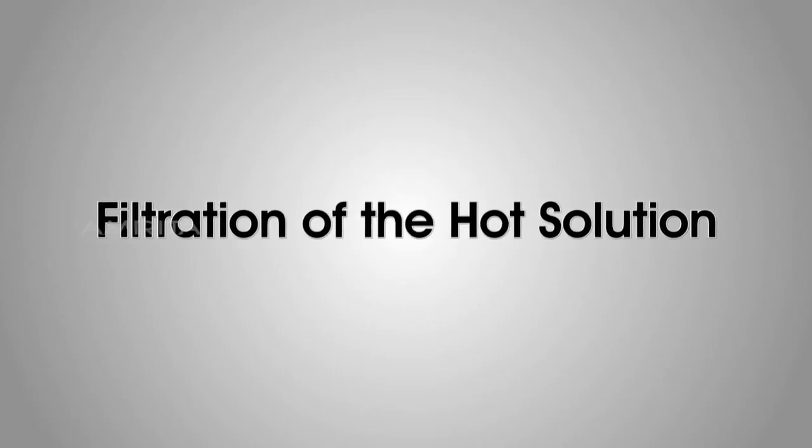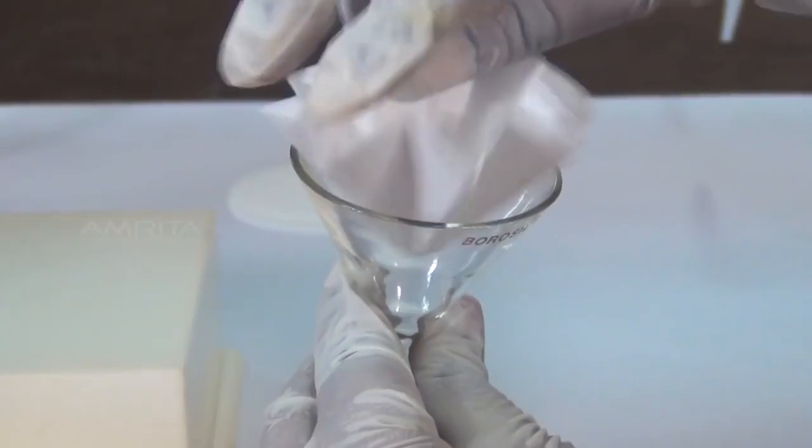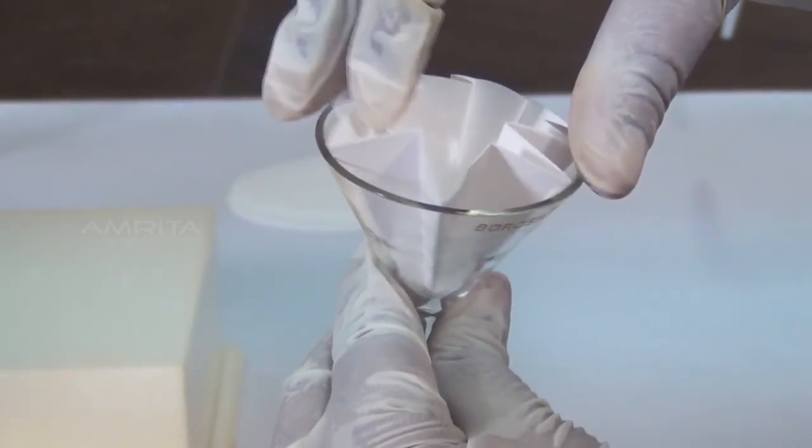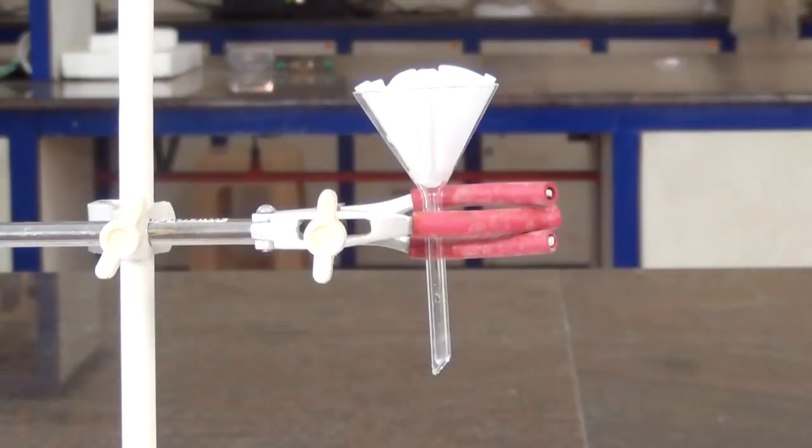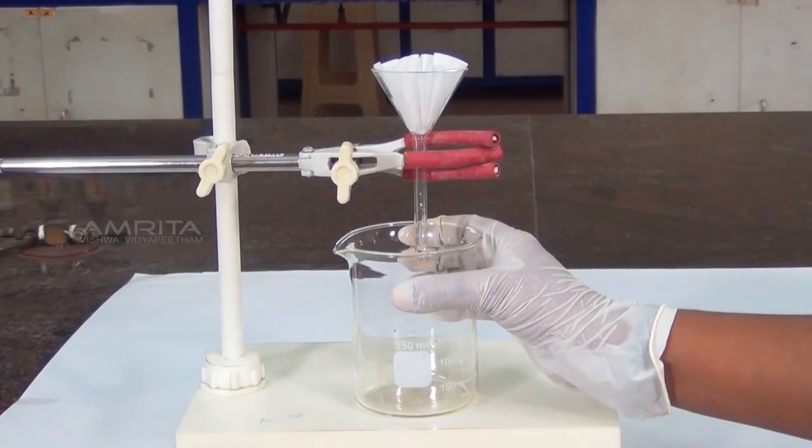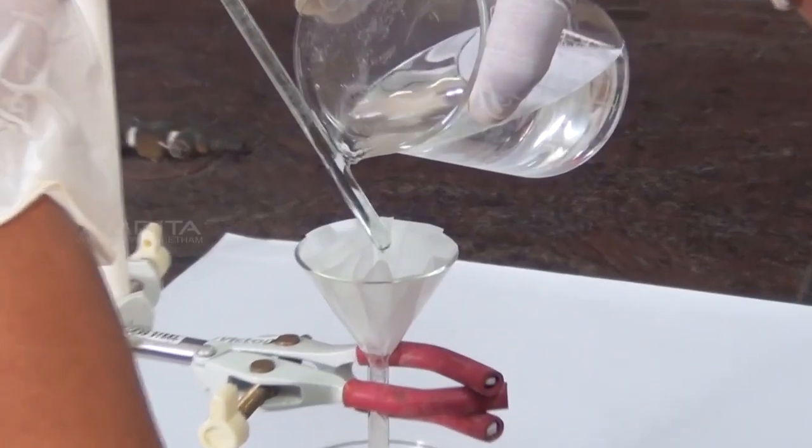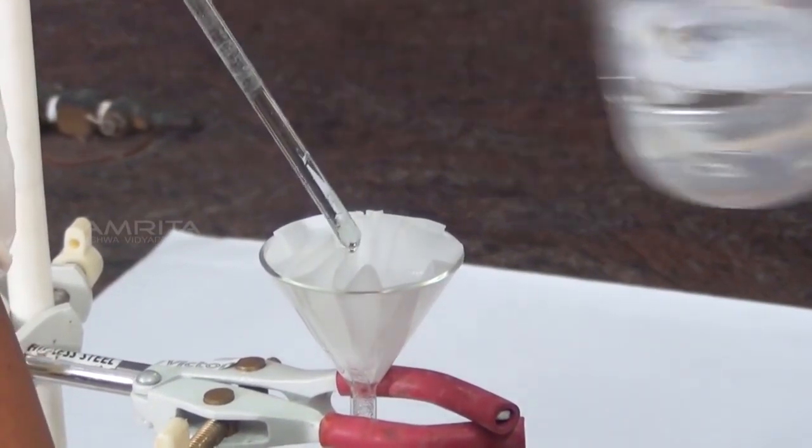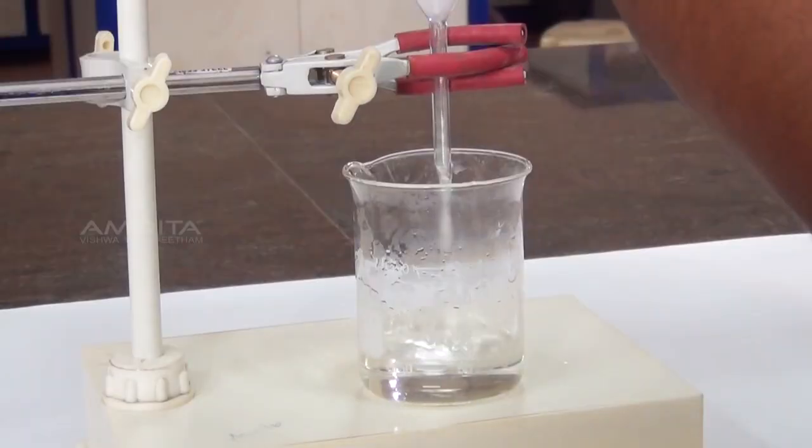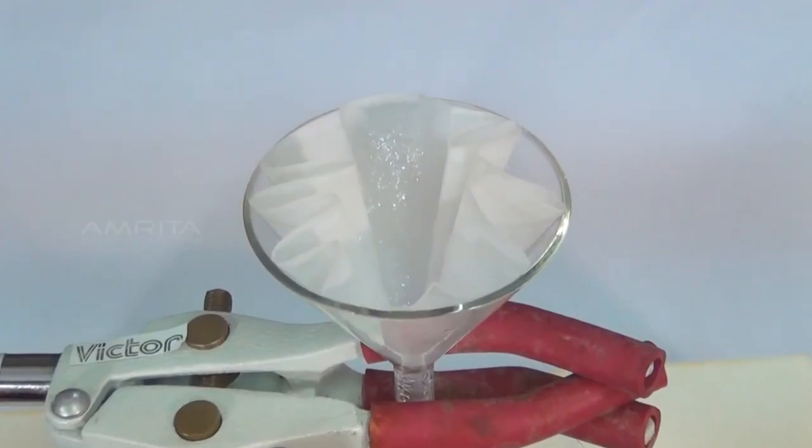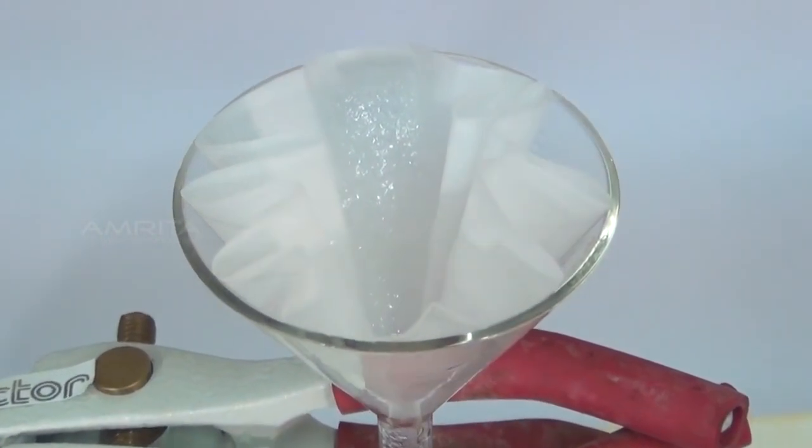Filtration of the hot solution: Place a fluted filter paper in the funnel and clamp the funnel to the stand. Place a beaker under the funnel. Pour the solution into the funnel over the glass rod and collect the filtrate in the beaker. The insoluble impurities are left on the filter paper.